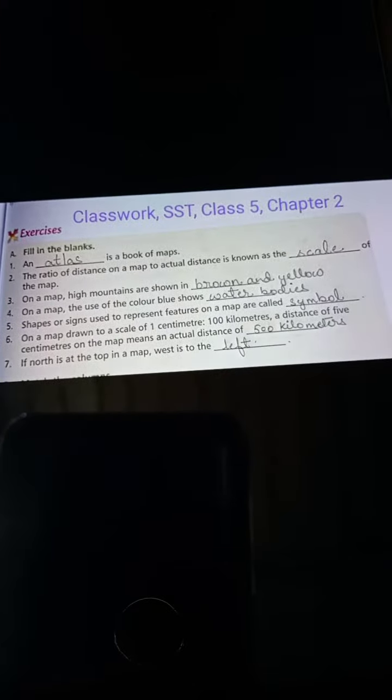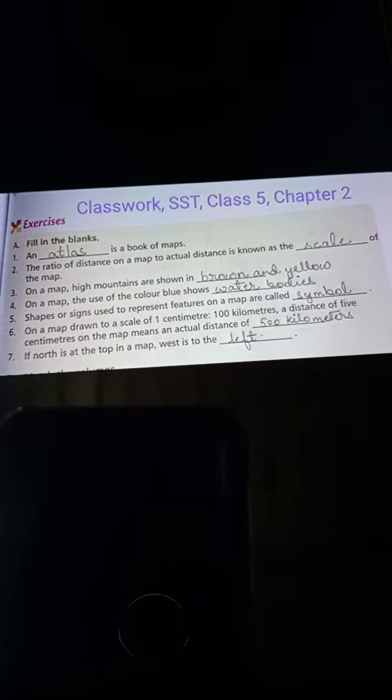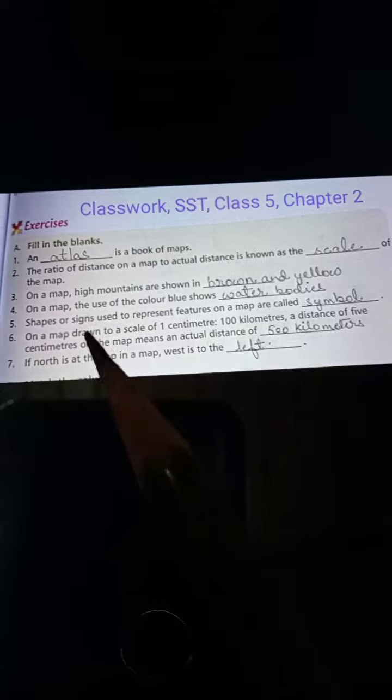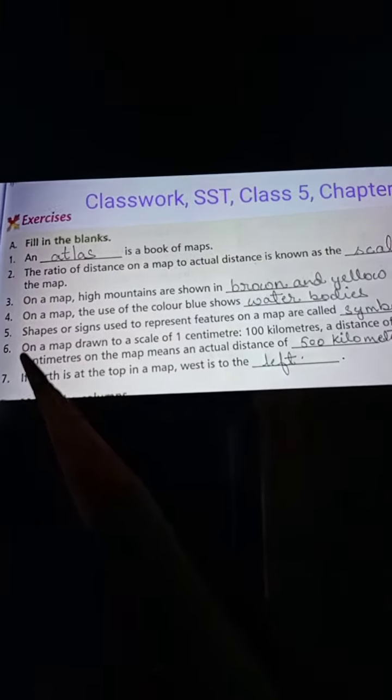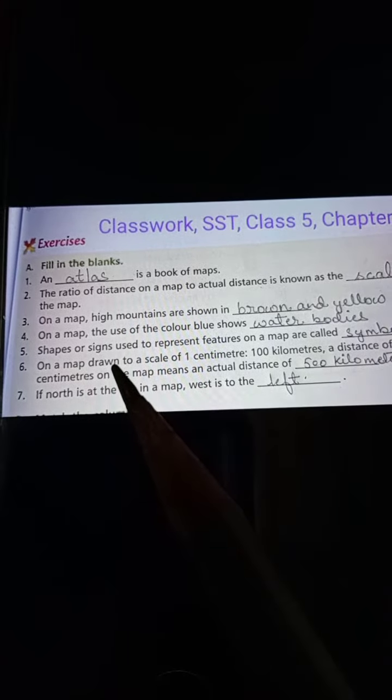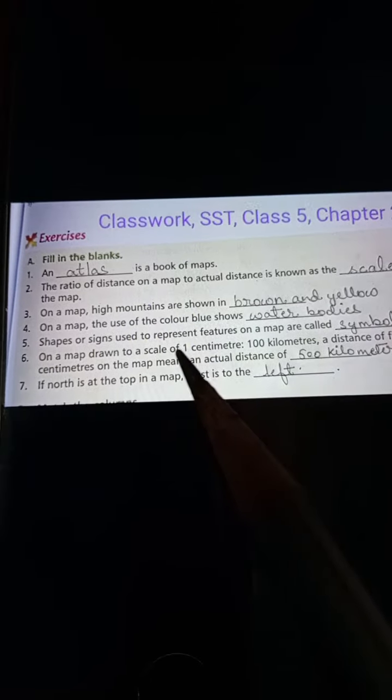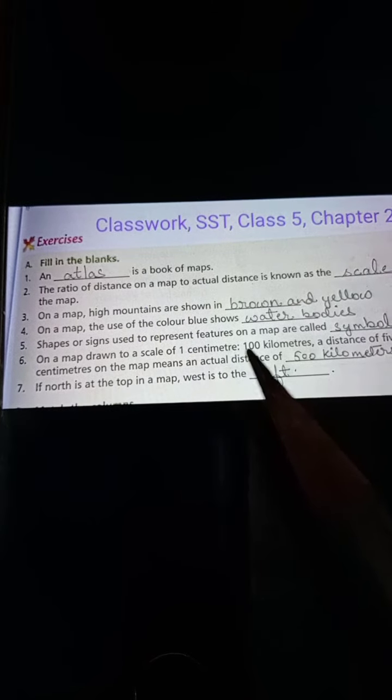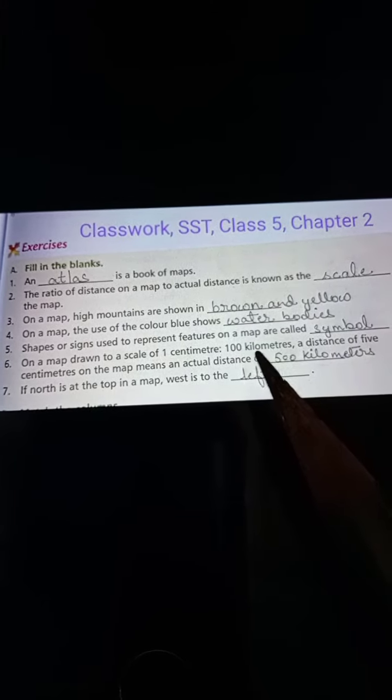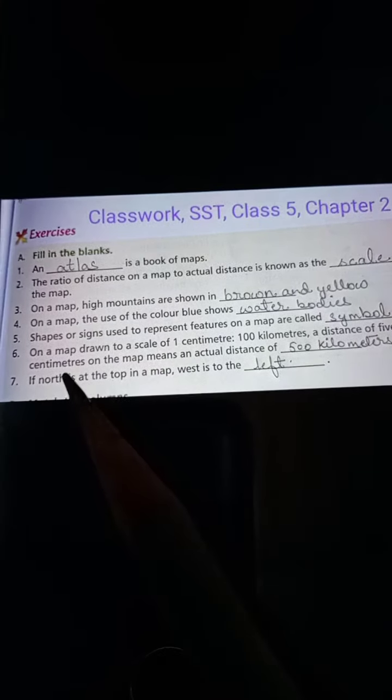Number six: Five centimeters on the map means an actual distance of 500 kilometers. So five centimeters, multiply by 100 kilometers, gives 500 kilometers.